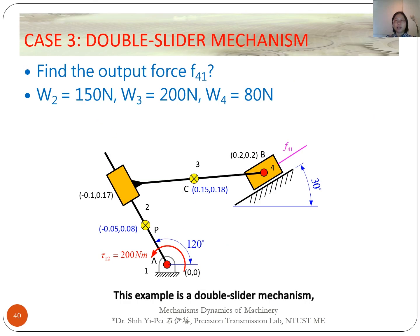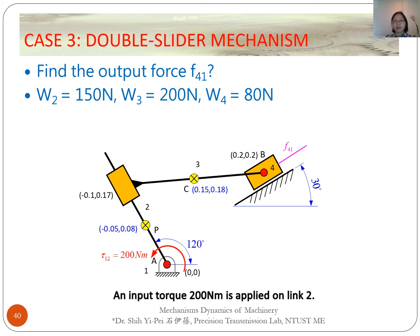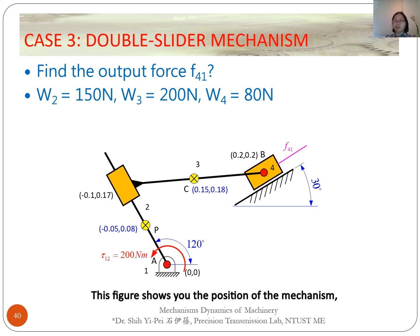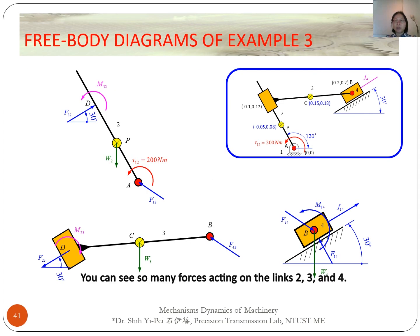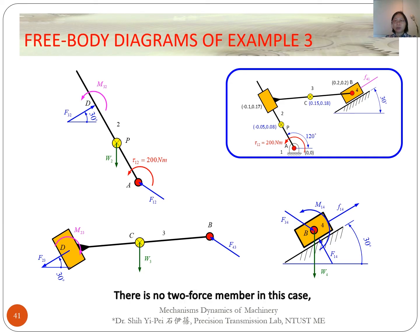This third example is a double-slider mechanism. It has two revolute joints and two prismatic joints. An input torque of 200 Nm is applied on link 2. Once again, weights of links are considered. The problem is to find the output sliding force. There is no two-force member in this case, so we start drawing free body diagrams from any link.